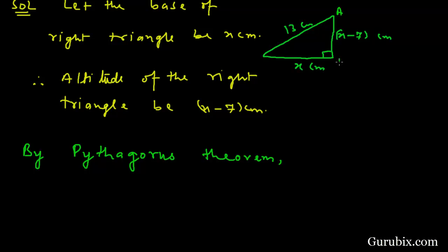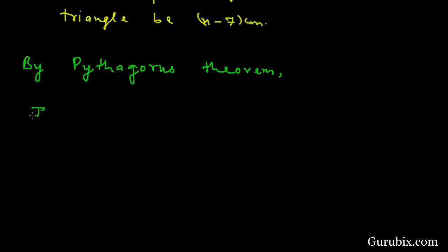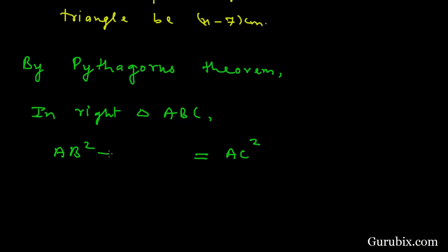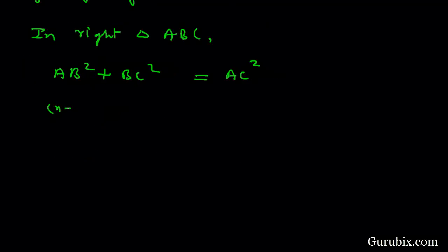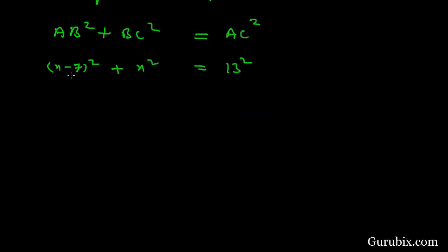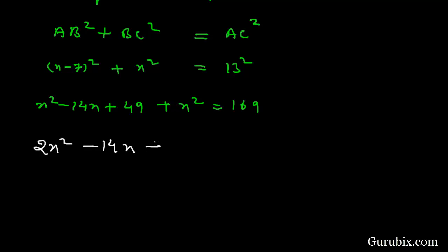Suppose this is A, this is B, and this is C. In right triangle ABC, the hypotenuse is AC. The square of the hypotenuse equals the sum of the squares of the other two sides. BC is X, so we have X squared. AC is 13, so we calculate 13 squared, which is 169. Expanding (X minus 7) squared gives X squared minus 14X plus 49. So we have 2X squared minus 14X plus 49 minus 169 equals 0.